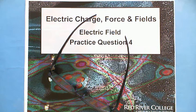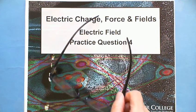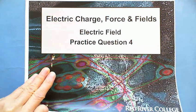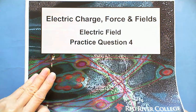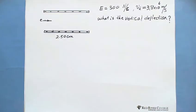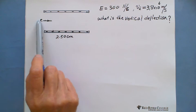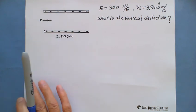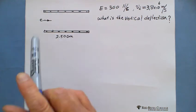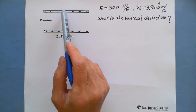Hi, welcome to WISEGuides. Electric field practice question 4. In this question, we're going to show you an electron beam that is horizontally shot in the electric field, which is created by parallel plates.